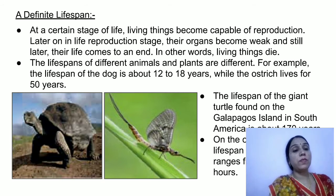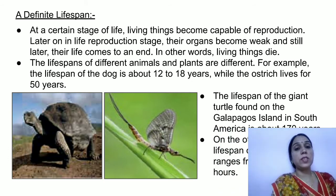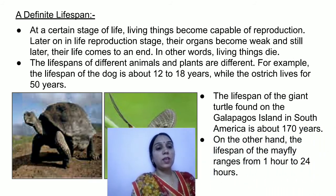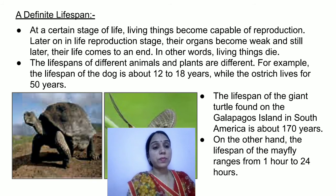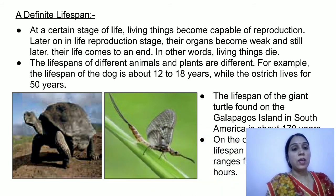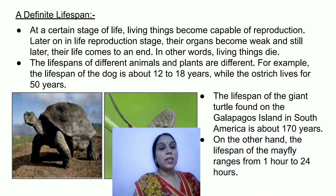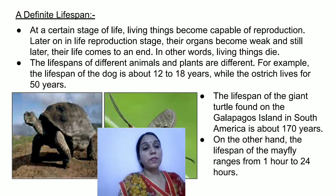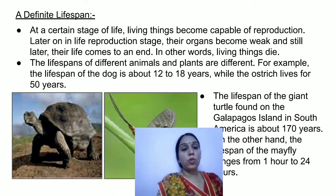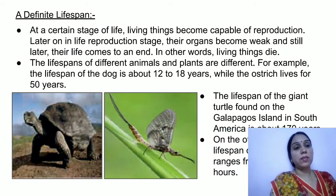The lifespan of a dog is about 12 to 18 years, while the ostrich lives for 50 years. The giant tortoise found on the Galápagos Island in South America has a lifespan of almost 170 years — a very long lifespan. On the other hand, the mayfly has a lifespan ranging from just 1 hour to 24 hours — an extremely short lifespan. I hope you all have understood what a definite lifespan means.